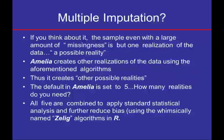In multiple imputation, we actually create several datasets that, although they honor the original data, may have slightly different imputed values. You end up creating other possible realities for the missing data. The number of datasets created in Amelia is set to 5, which seems to be a minimum in my review of the published literature. All five of these datasets are combined to apply standard statistical analysis and further reduce bias.